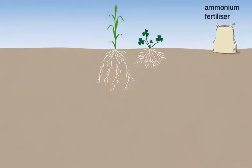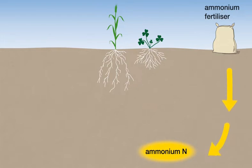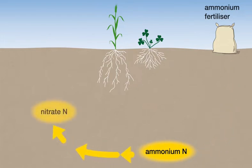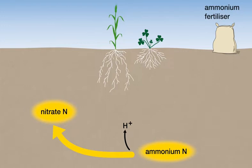Ammonium-based fertilisers are the major cause of soil acidity from fertilizer in Western Australia. Ammonium nitrogen is readily converted to nitrate by bacteria in the soil. During this process, hydrogen ions, which cause soil acidity, are contributed to the soil. Different forms of ammonium fertilizer contribute different amounts of hydrogen ions.